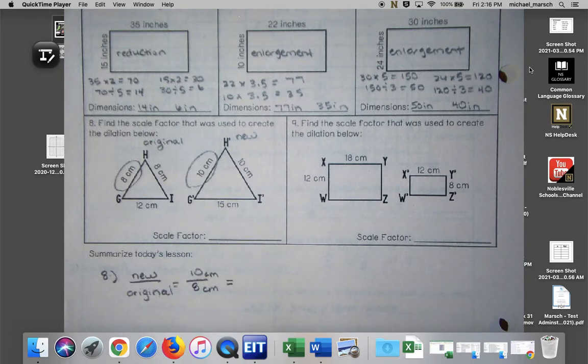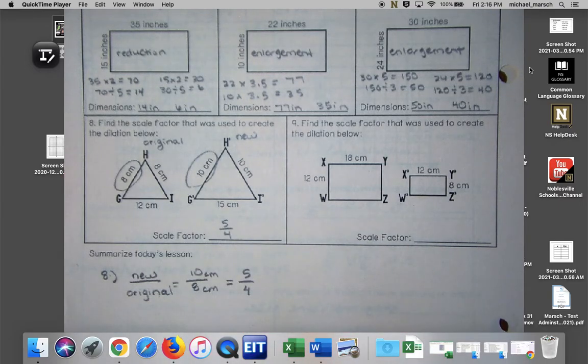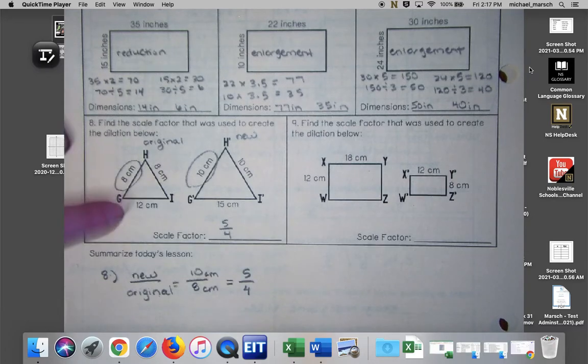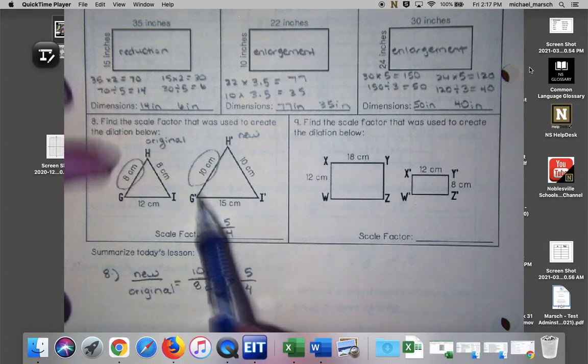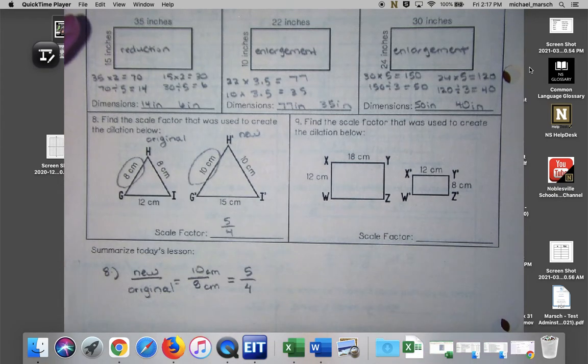This is my pre-image and my image here and this can be simplified to what? Five over four. So my scale factor is five over four. Do you have to do that side? You just have to do one side because if we know it's a dilated figure then that scale factor is going to apply to all three sides. But I can't do like G to H and G to I, I have to make sure that they are the same side of the figure.